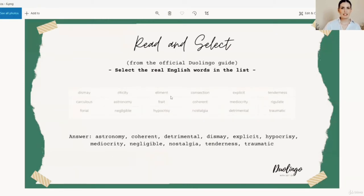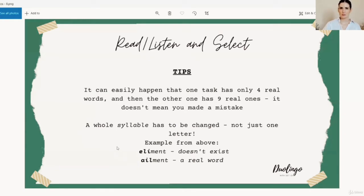And this is how you will know. This is the best tip that I can give you. They do not change only one letter. So if you're wondering, oh, is this with M-A or M-E? If it's only one letter that you're wondering, most probably it's a real word. Because what they do is they change the whole syllable in order to make a new word, a non-existent word. Let us take an example from above, from the previous slide. So they had the word element. And the word that exists is ailment, meaning a sickness, an illness. So they changed the whole syllable, not just one letter. That's how you will know if the word is actually real.